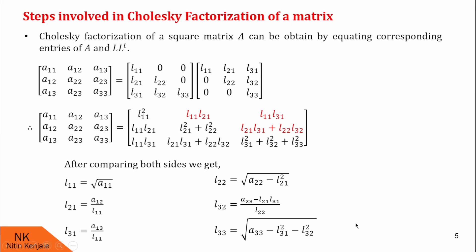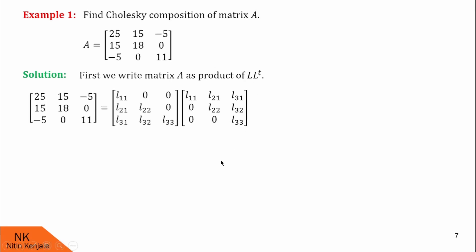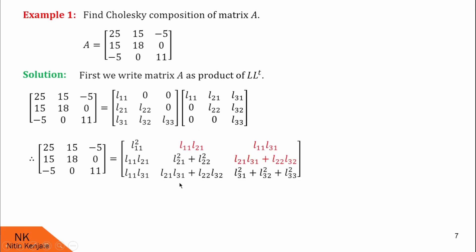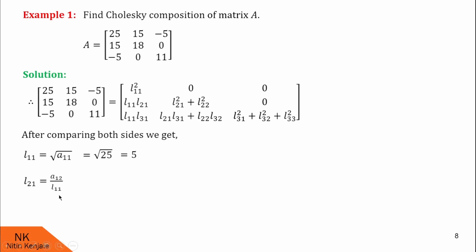Now let us proceed to examples. In example number one, we are given a 3×3 matrix A and we are asked to find its Cholesky decomposition. In the solution, first we write matrix A as a product of L and L-transpose, where L is a lower triangular matrix. Next we take the product of these two matrices and compare both sides. Using the formulas obtained earlier: L11 = √A11 = √25 = 5. L21 = A12 / L11 = 15 / 5 = 3.